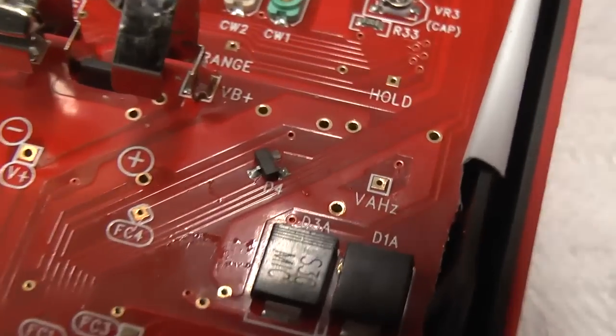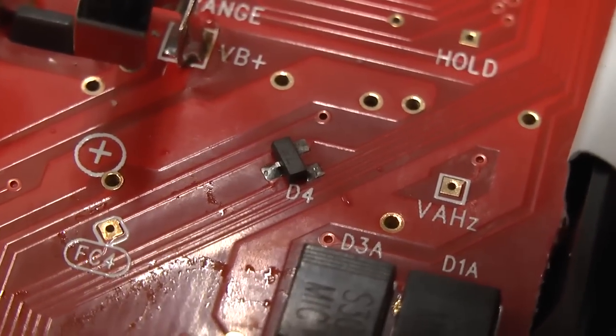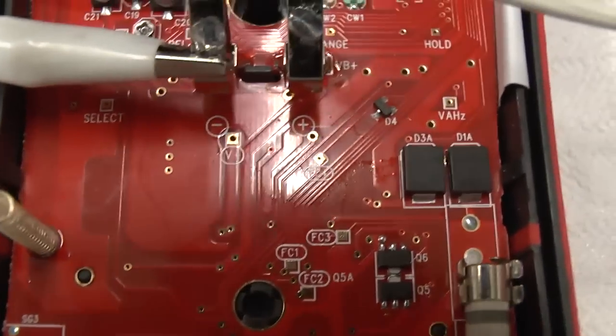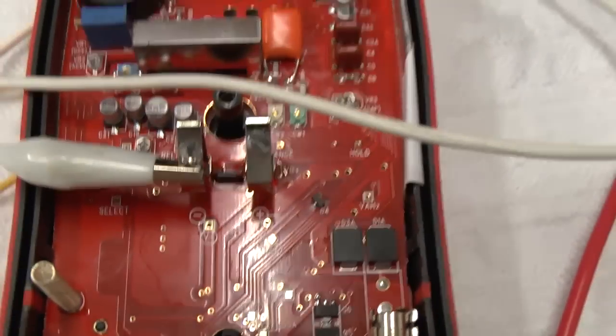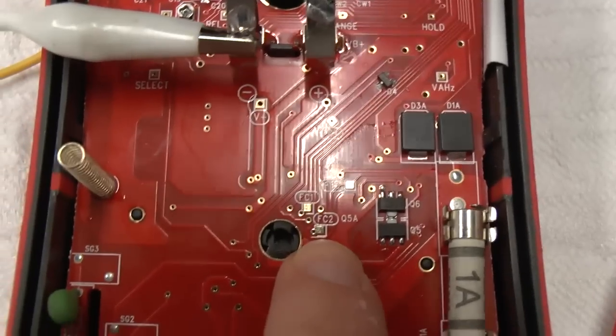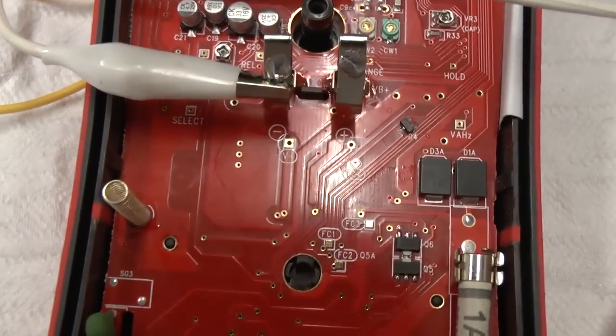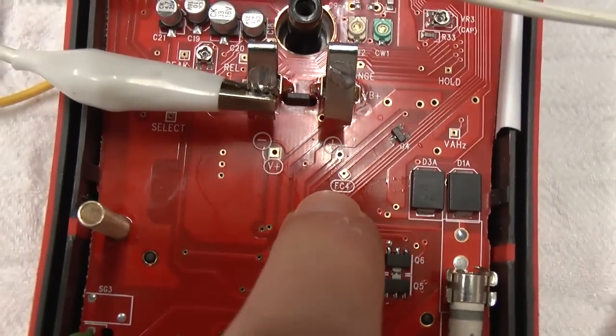D4 is located on the board right there in the center of the picture. We also have some test points. As you can see, right there is FC2, FC1, 3 and then there is also FC4 somewhere, that's up there.